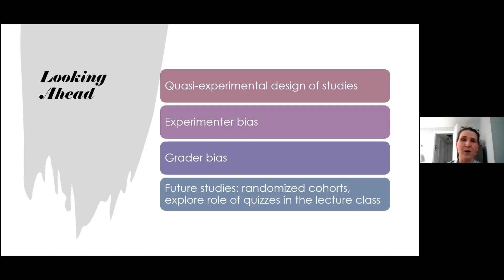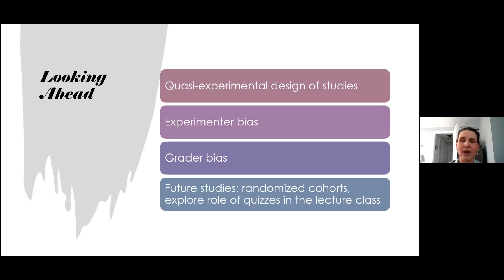Experimenter bias is also plausible based on authors working as both the principal investigators and the instructors for both sections in pretty much all the studies. This can be problematic if the instructor has a preference for teaching one format and ultimately teaches one section better. New studies may benefit from keeping instructors and researchers distinct. Future studies should also explicitly describe the test format and how exam graders were blinded to the class sections, since this was only described in two of the studies.